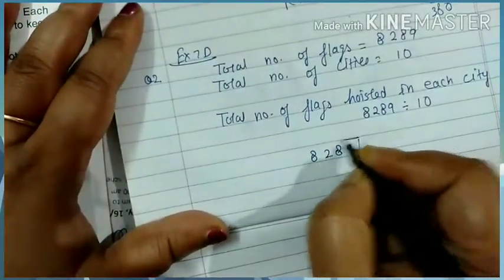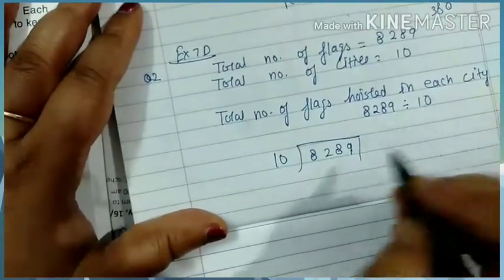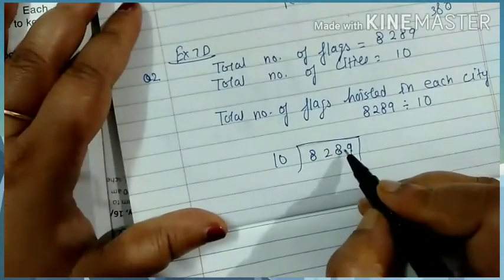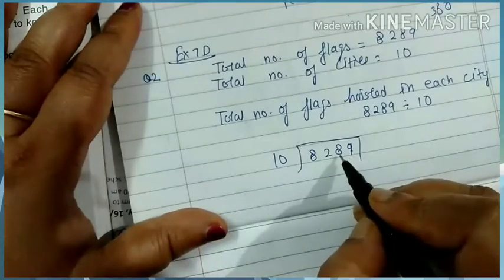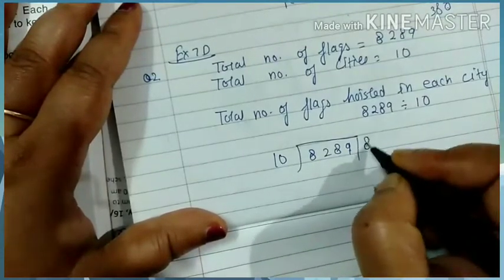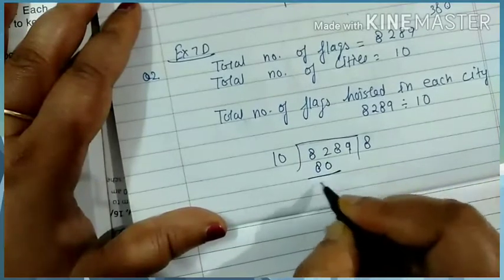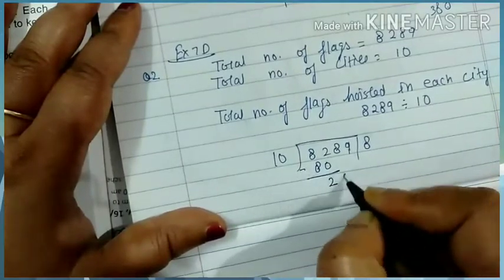So now let's do divide part. 8289 divided by 10. I have taught you that if we do 10, how many times it will happen? We divide by 1. This will be our quotient. But let's divide by this. 80, so 2, 8, 20.